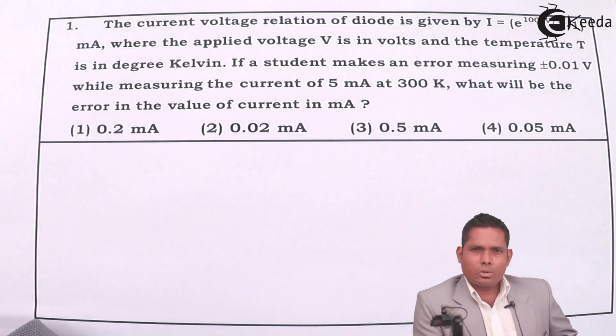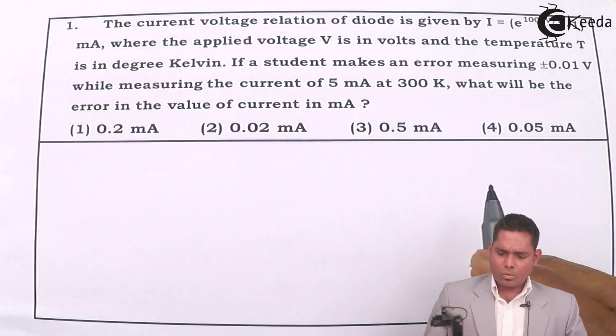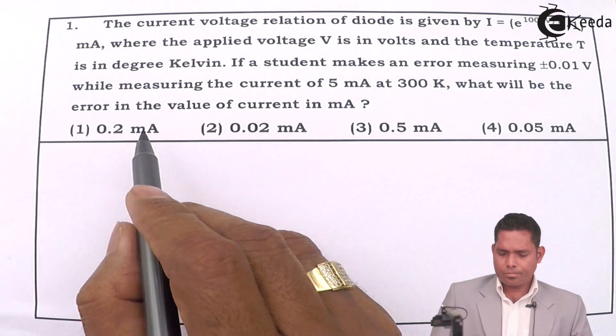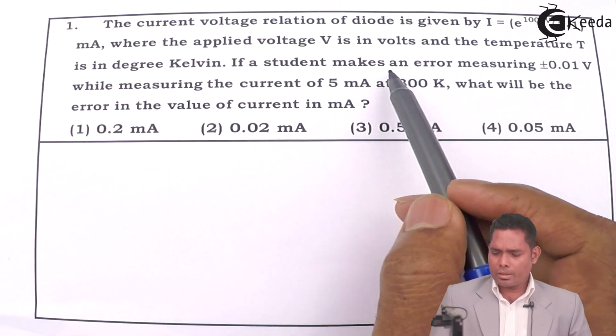Students, let us start the first question of JEE Men's Physics paper. The question is basically about error.